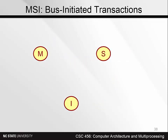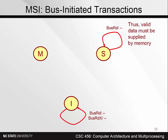Now let's look at the bus transactions. If our cache has a line in invalid state and another processor reads or writes the block, a bus read or bus read X comes in — our cache doesn't have to take any action because the line is already invalid. If our cache has a line in state S and a bus read comes in, we stay in state S; we don't need to do anything, so the other processor reads the line from memory. The MSI protocol does not implement cache-to-cache transfers.